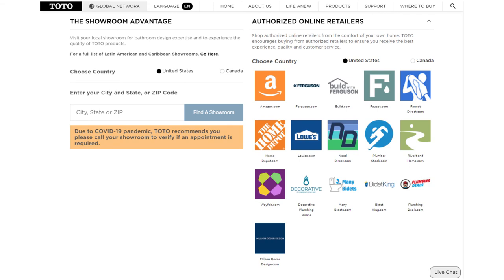But if you decide for any reason not to purchase from us, we would still strongly encourage you to purchase your Toto NeoRest from an authorized retailer. You can find a full list of authorized retailers at TotoUSA.com and then click on the menu option up at the top of their website 'where to buy'.